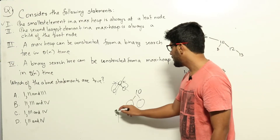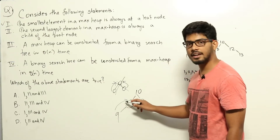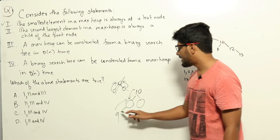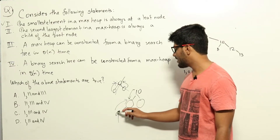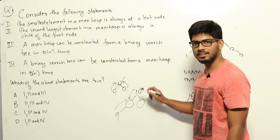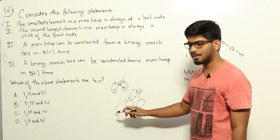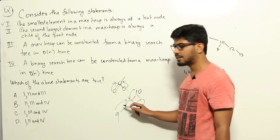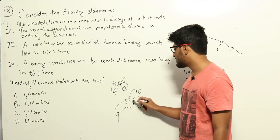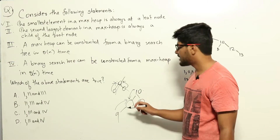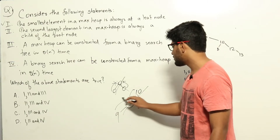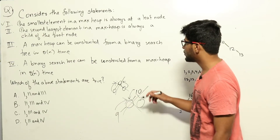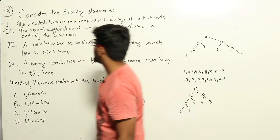In that case, the children of the root would need some value greater than 9 but also less than 10. But since 9 is the second largest element, the only element greater than 9 is 10 itself. So we can't find another element greater than 9 and less than 10 to be 9's parent and 10's child. Such a case is not possible — the second largest element always has to be a child of the root. Statement 2 is correct.